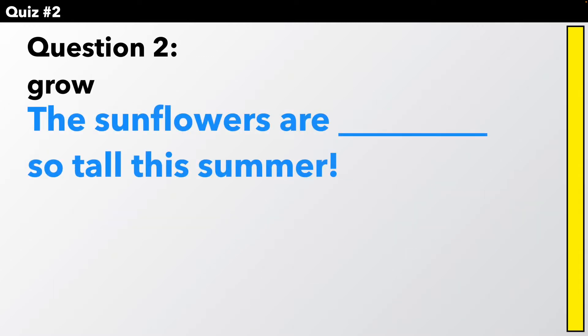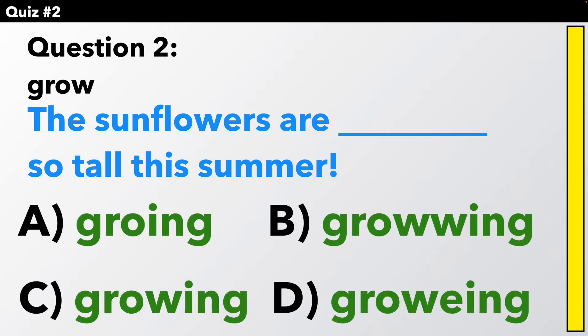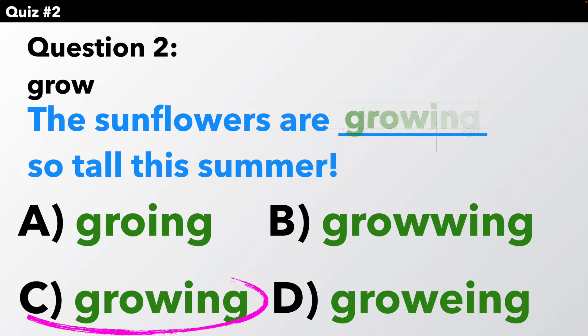Question number two. Grow. The sunflowers are growing so tall this summer. Which is the correct spelling? This time the answer is C, G-R-O-W-I-N-G. We changed the verb in no way at all. Just add I-N-G.